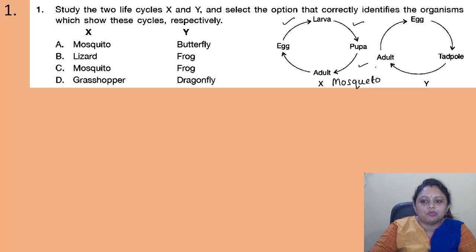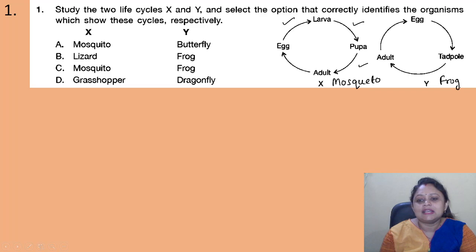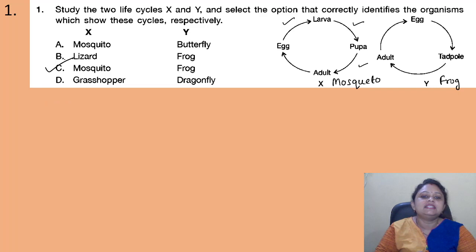Life cycle X is the life cycle of a mosquito. The next one is adult to egg to tadpole to adult — this is the life cycle of a frog. So the correct answer is X is mosquito and Y is frog, which is present in option C. Option C is the correct answer.